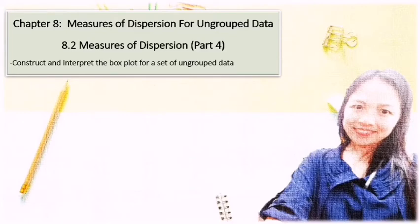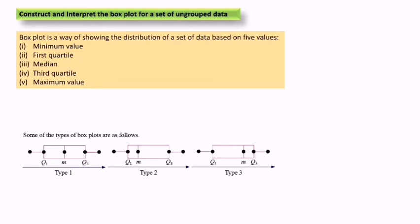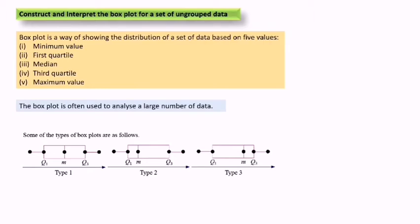In this video, teacher will teach you how to construct and interpret the box plot for a set of ungrouped data. A box plot is a way of showing the distribution of a set of data based on five values: first, the minimum value; first quarter; median; third quarter; and maximum value. The box plot is often used to analyze a large number of data.